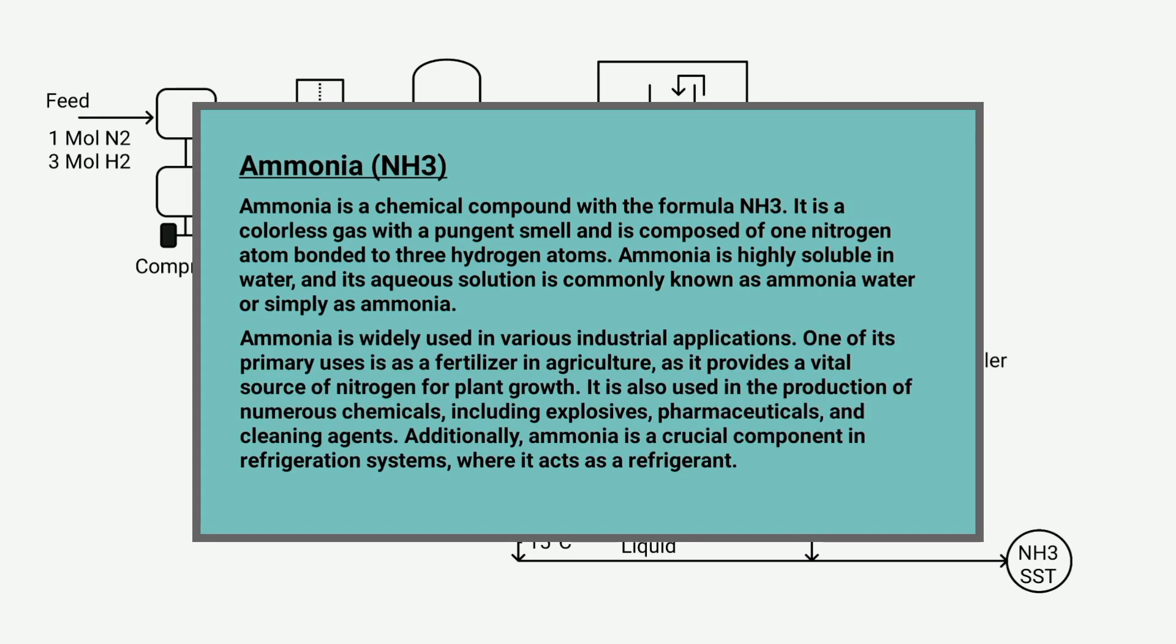Ammonia is widely used in various industrial applications. One of its primary uses is as a fertilizer in agriculture as it provides a vital source of nitrogen for plant growth. It is also used in the production of numerous chemicals including explosives, pharmaceuticals, and cleaning agents. Additionally, ammonia is a crucial component in refrigeration systems where it acts as a refrigerant.